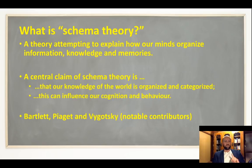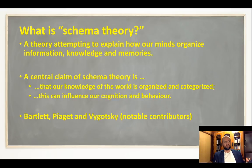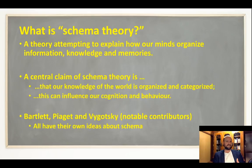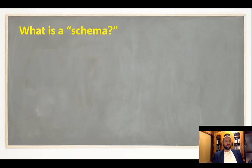Schema theory is a little different from other theories in that there wasn't one person who came up with the idea — it has been contributed to by a number of different researchers. The three most notable are Bartlett, writing about it in the 1920s, Piaget around the same time, and a third contributor slightly later. Schema theory encompasses all the ideas about schemas that have come out of cognitive psychology over the last 100 years.